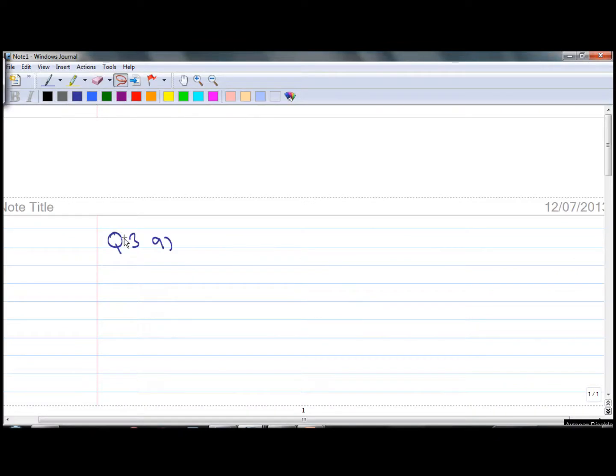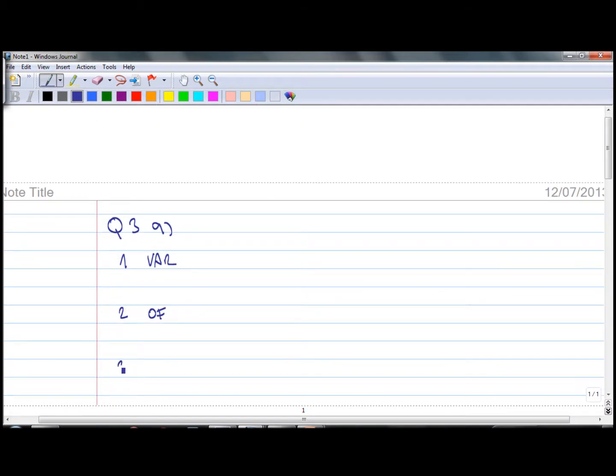In your answer sheet, identify the question and question part. Let's summarize our information. Let's define the problem first. We know there are going to be variables, an objective function, and constraints.